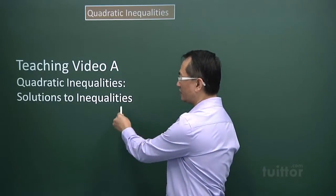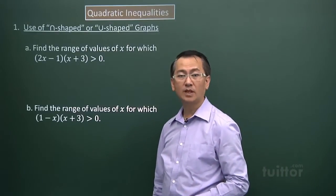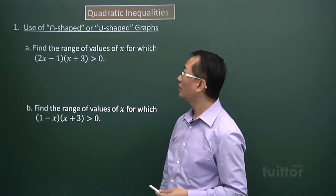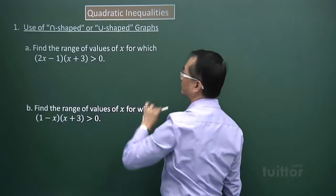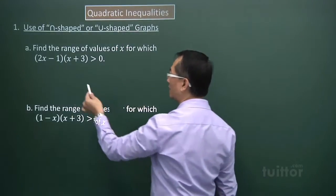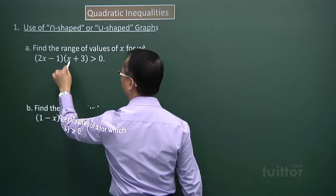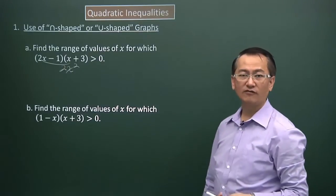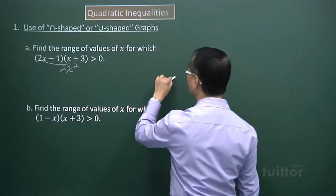We are now looking at a teaching video on quadratic inequalities, specifically solutions to inequalities. For part one, we are looking at using a tool to find inequalities. You can have the U-shaped and the inverted U-shaped graphs. When we examine the X terms in the first and second factors, I get a product of 2X squared, so the coefficient of X squared is positive and we will have a U shape.